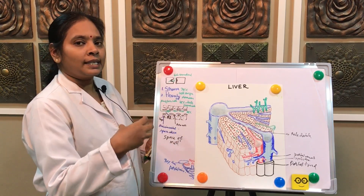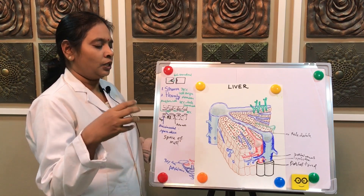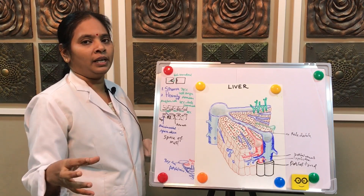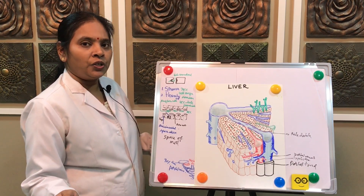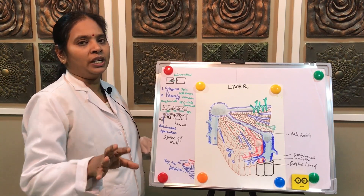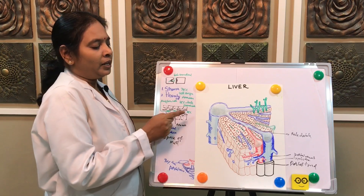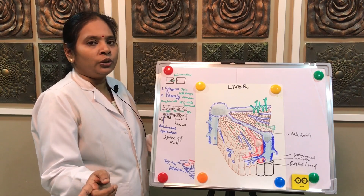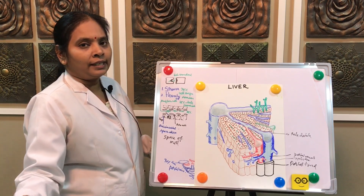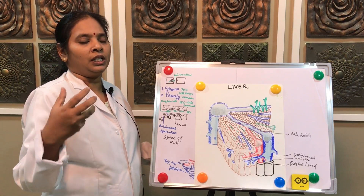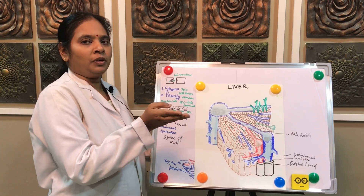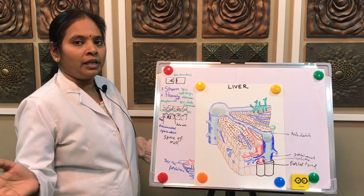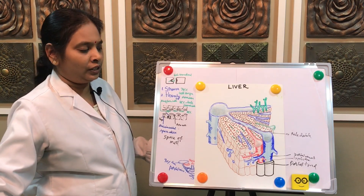The hepatic duct joins with the cystic duct — the gallbladder duct — to form the common bile duct. The common bile duct joins with the pancreatic duct and drains into the small intestine, particularly the duodenum. So some drugs or chemicals travel through the bile into the intestines and are excreted through the feces, while others are released into the bloodstream and excreted through urine.